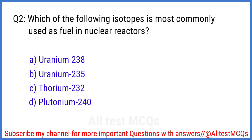Q2. Which of the following isotopes is most commonly used as a fuel in nuclear reactors? The right answer is option B. Uranium-235.